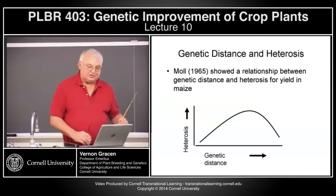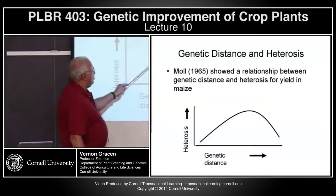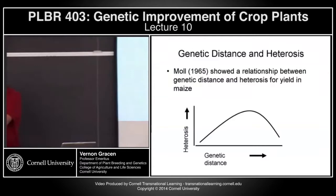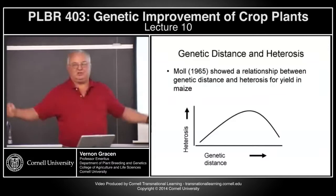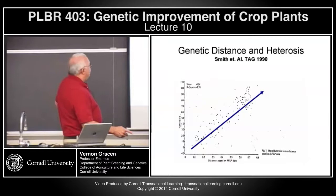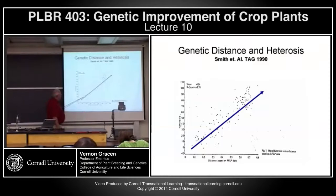Genetic distance and heterosis: back in the 60s, Maal showed that the more genetic distance between the parents you cross together, the more heterosis you get — until you reach a point where things are so distantly related that you have problems with sterility and performance. But over a pretty wide range, the more diverse things are genetically, the more heterosis you get. An isozyme study by Steve Smith and others at Pioneer looked at a range of maize inbreds and found a pretty good correlation between genetic distance and heterosis.